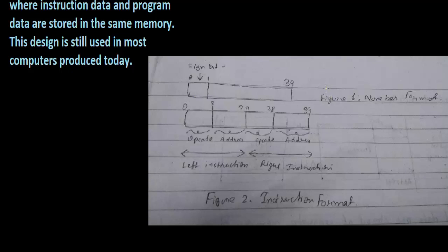Figure one shows the data format - how data is stored. The leftmost bit represents the sign bit: 0 is for positive and 1 is for negative. Then the remaining 39 bits, from 1 to 39, are used for number size, for indicating the number size. This was the number format or data format.